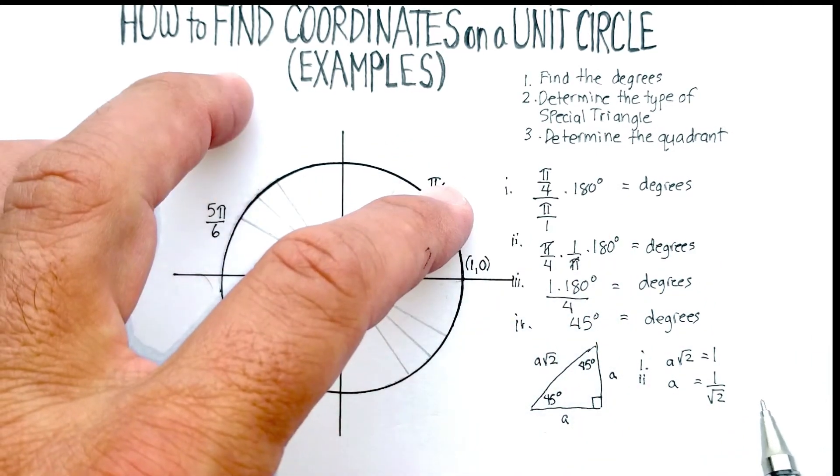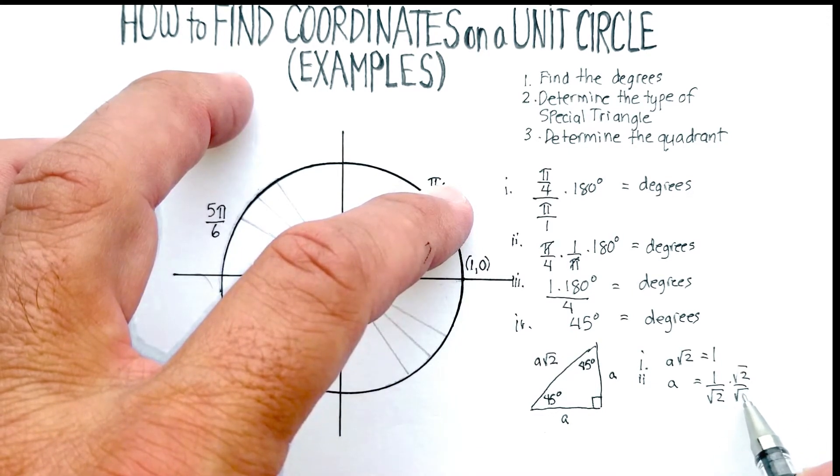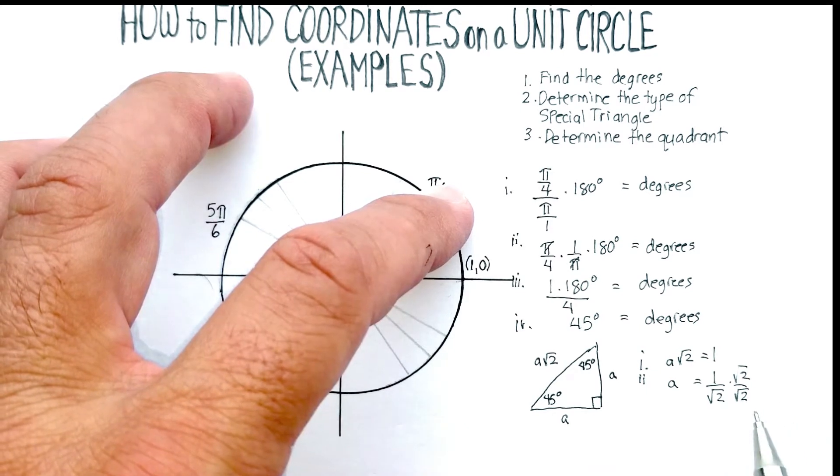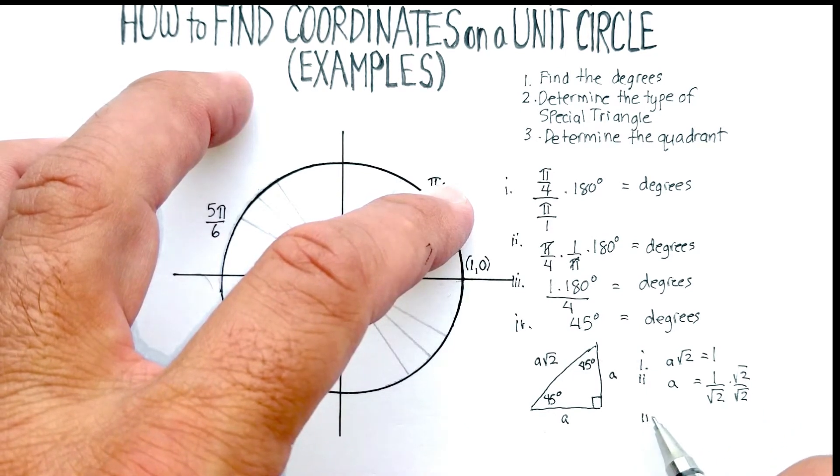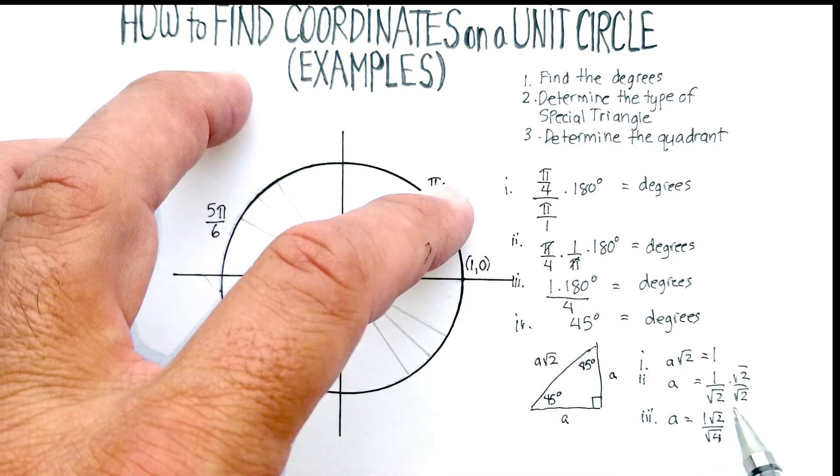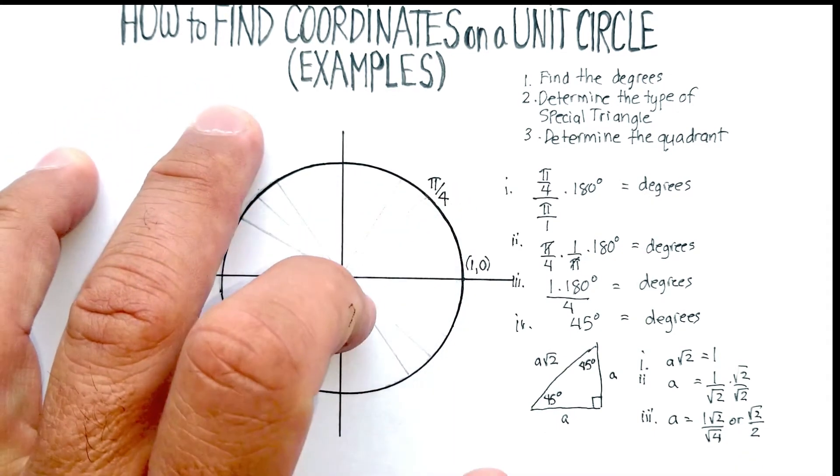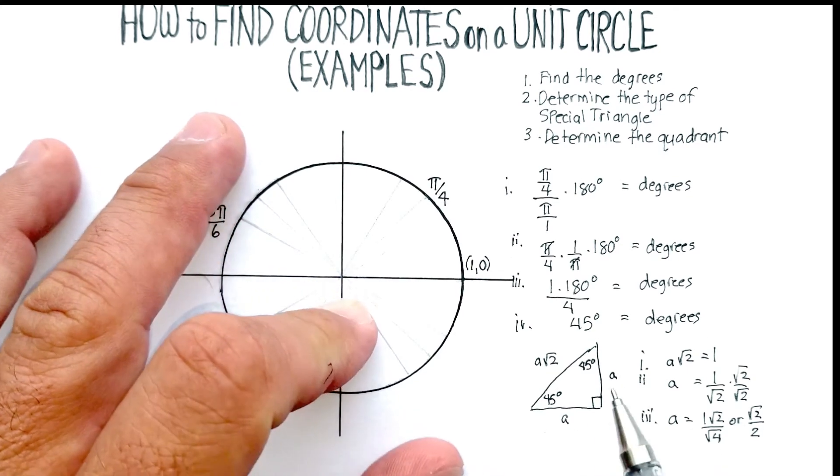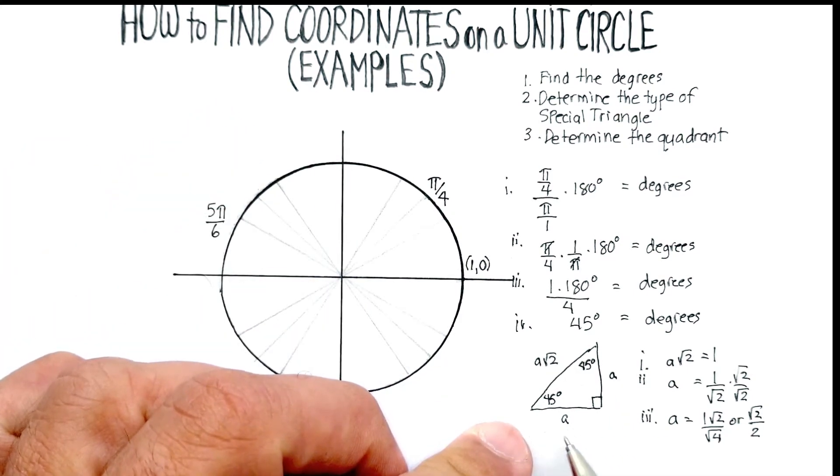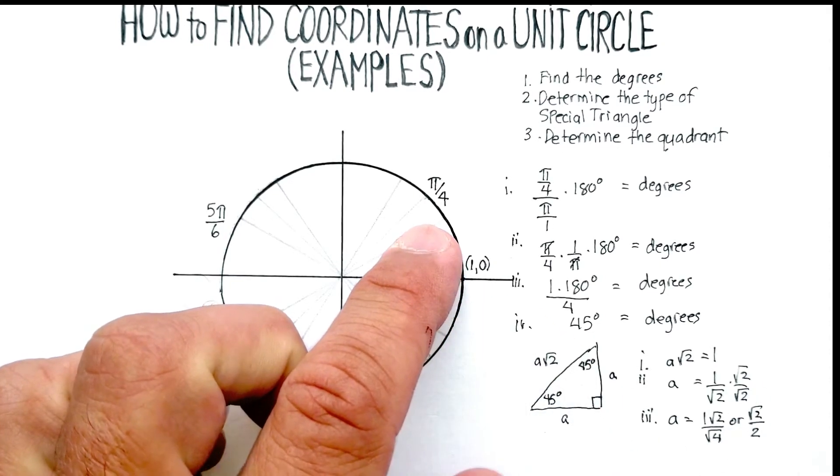So we'll get a is equal to 1 over √2. Remember, we don't want a denominator as a radical. So we're going to multiply by √2 over √2, which is just 1. And then we'll get a is equal to √2 over 2. So now we know that our x distance is √2 over 2, and our y distance is √2 over 2.